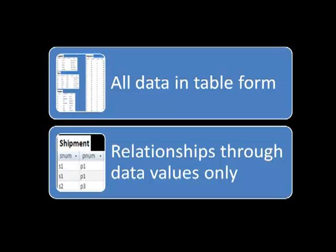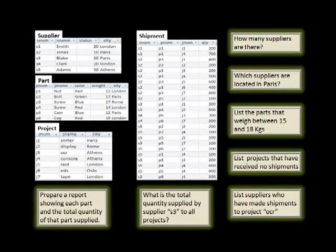Once you have this kind of data represented in the form of a relational model, what can you do with it? We can answer all kinds of queries. These are simply examples — seven queries, just enough to fill up the page; you could come up with hundreds more. For example: how many suppliers are there? We know there are five — that information can be gleaned from this schema. List the parts that weigh between 15 and 18 kilos. List projects that have received no shipments — you could go through the data and answer that question.